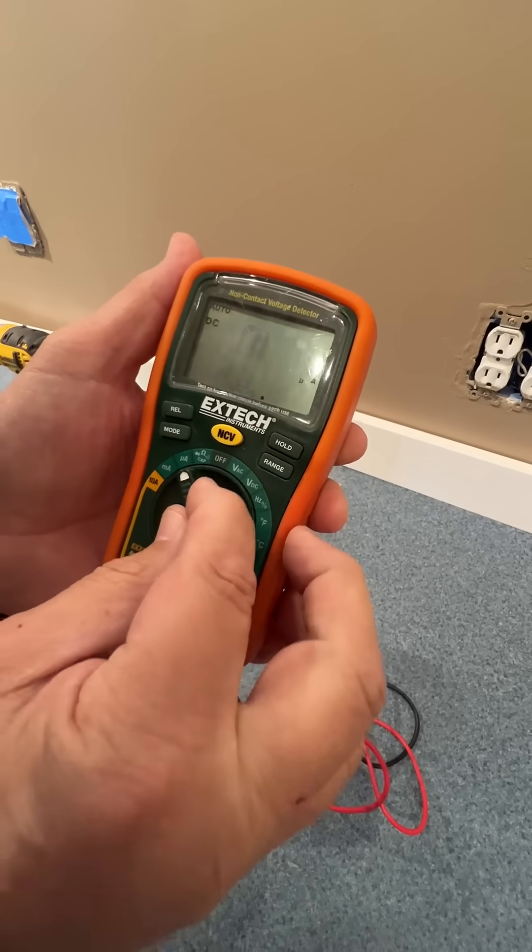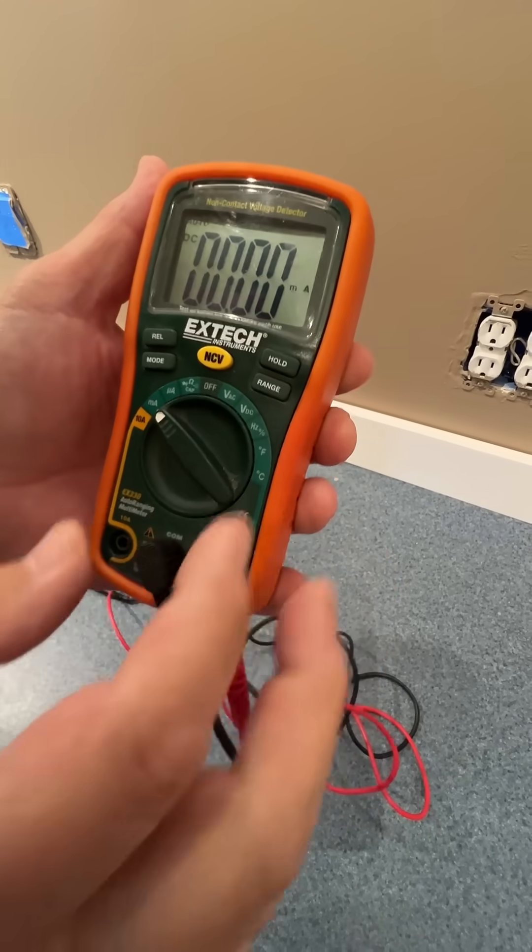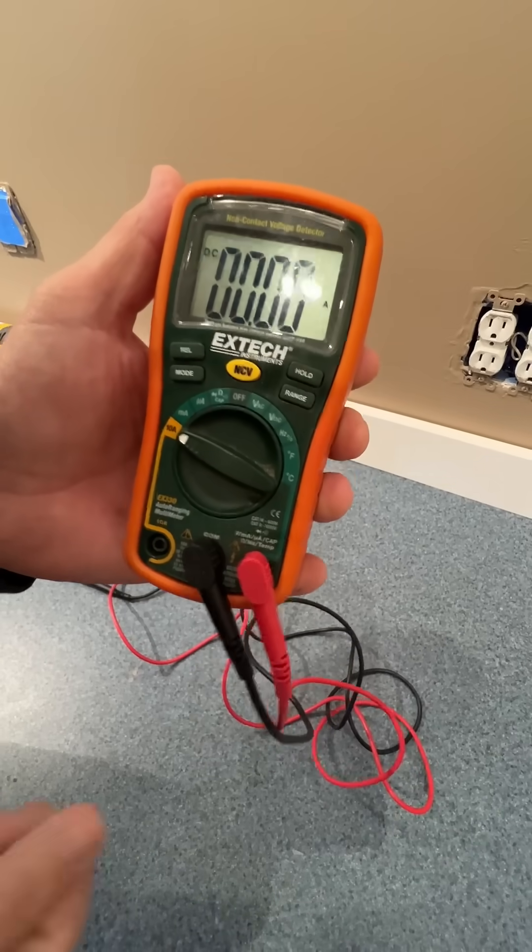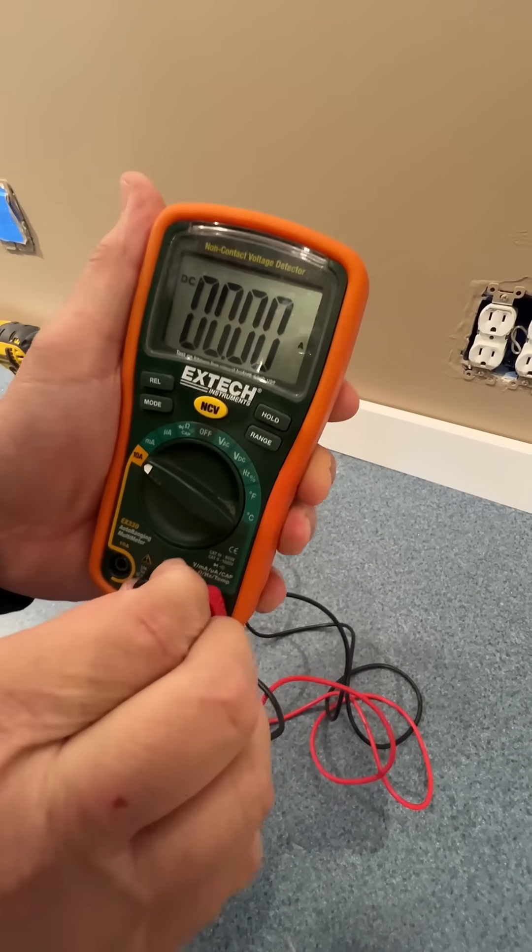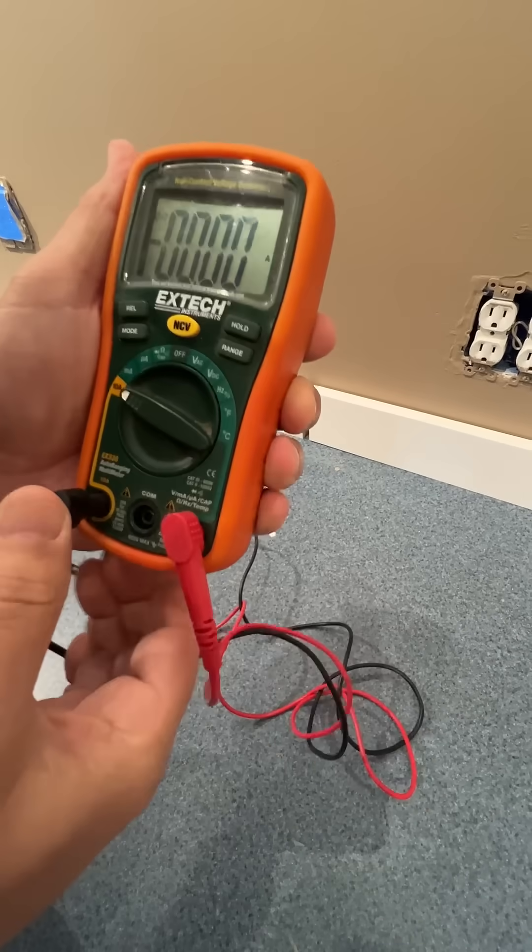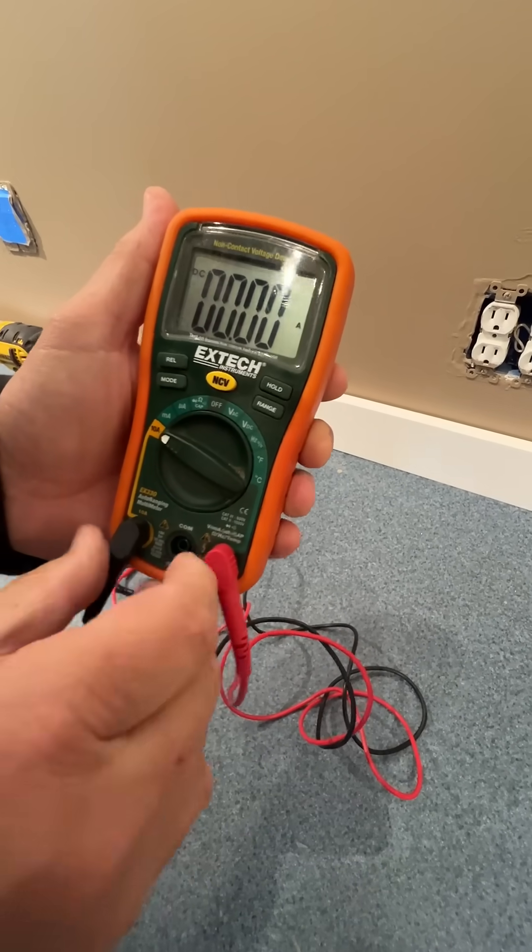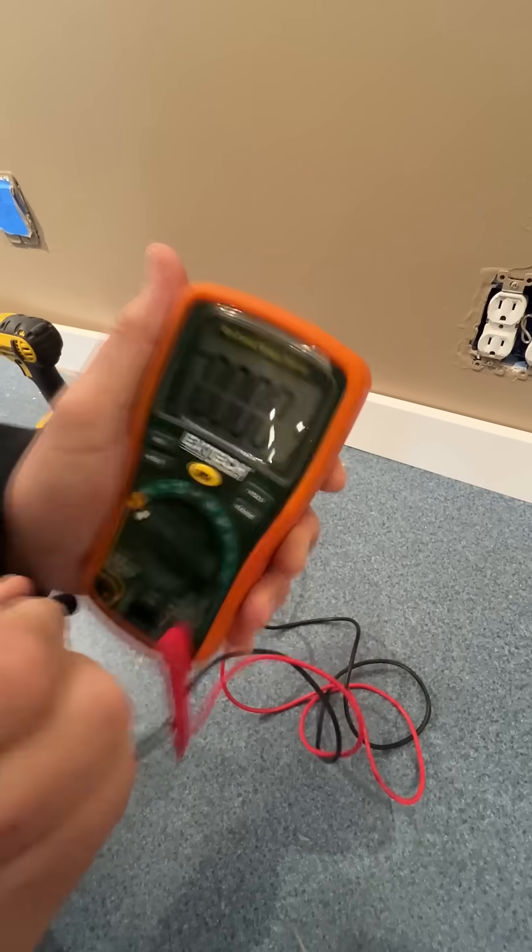This is an ammeter right there. That's microamps, milliamps, and 10 amps. Now when you do the amps, you need to move over to here and actually break the circuit. But this device does it all. It really does.